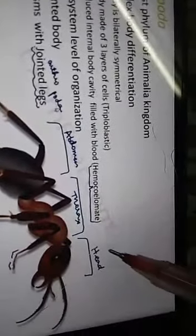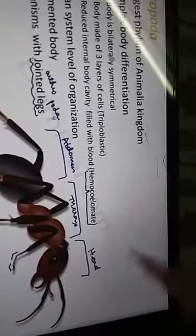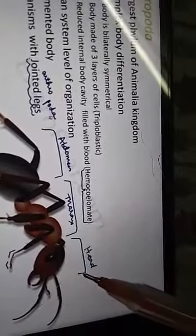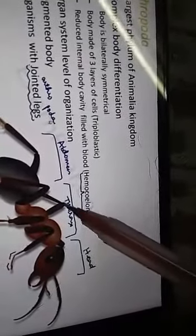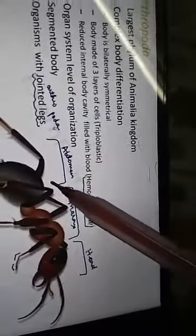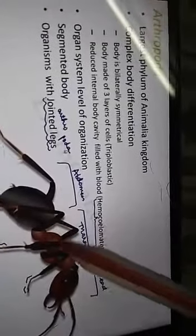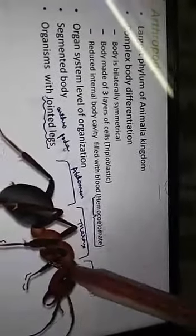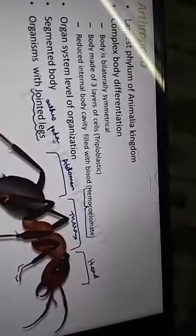What is the structure of the body? The body is segmented into three regions: head, thorax, and abdomen. The exoskeleton is hardened and is made up of chitin. Chitin is tough and hard, and it protects the animals.